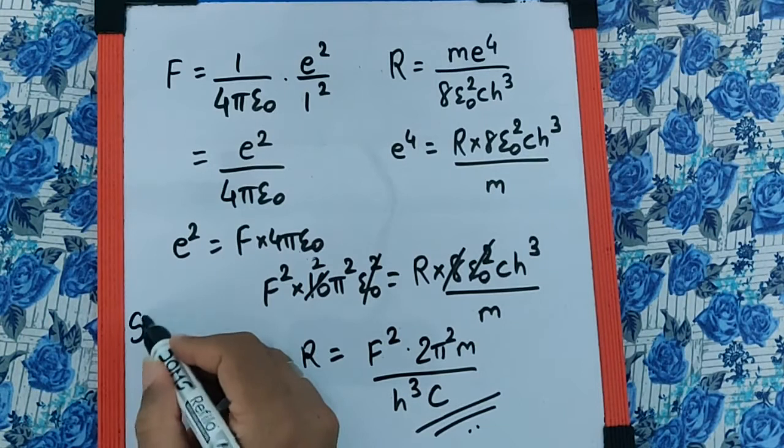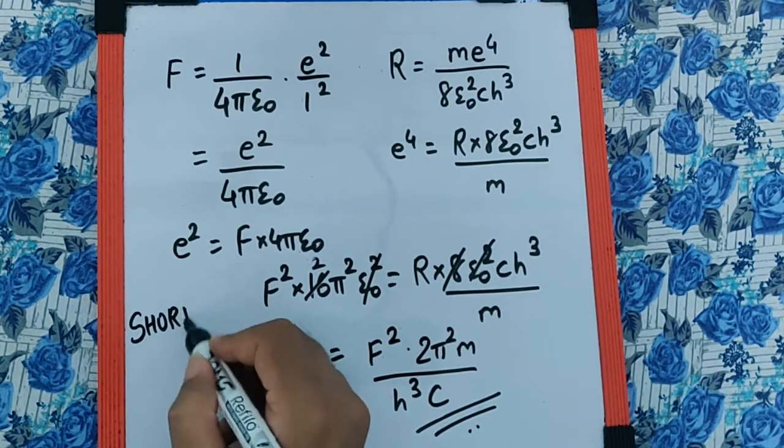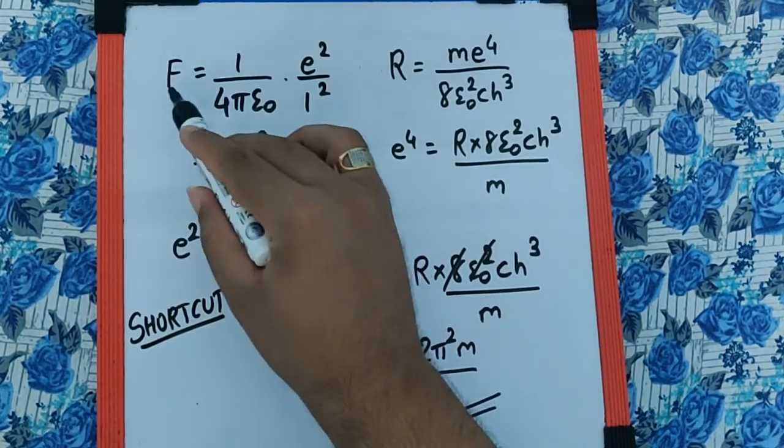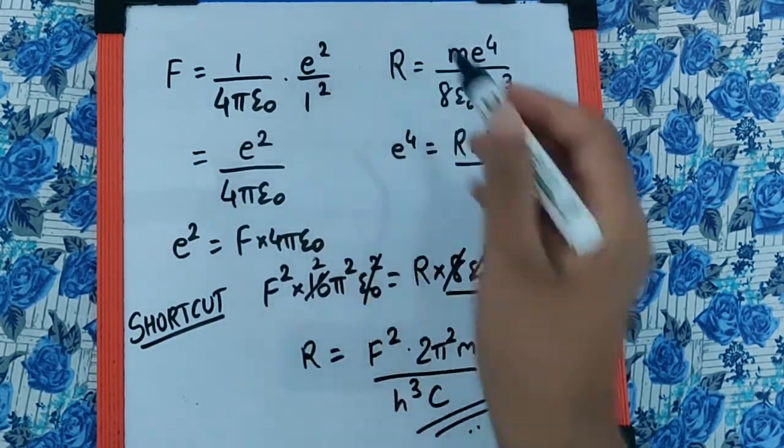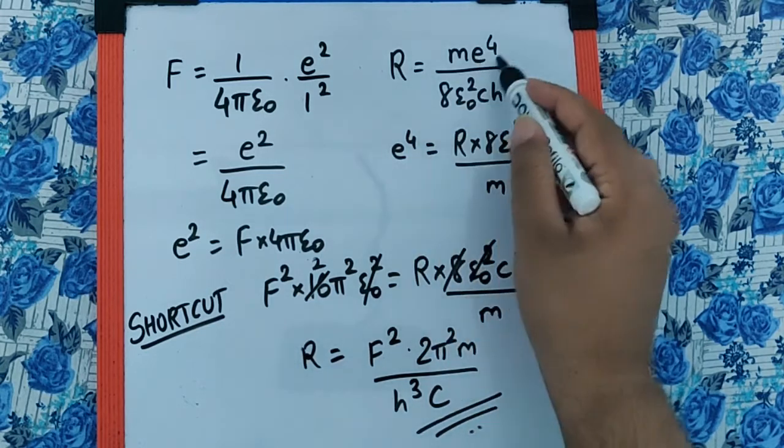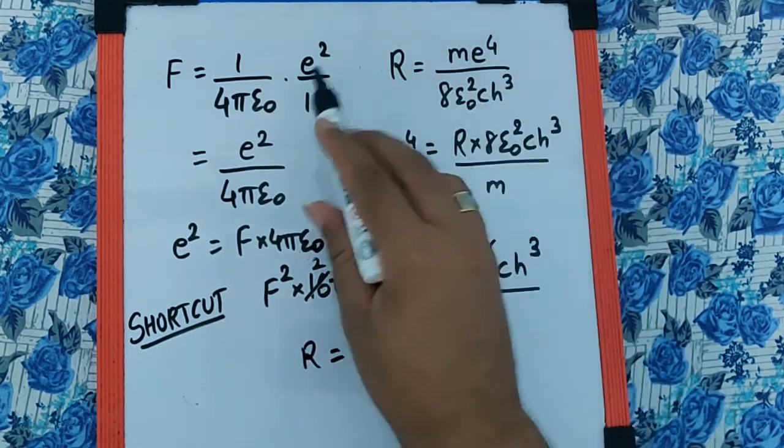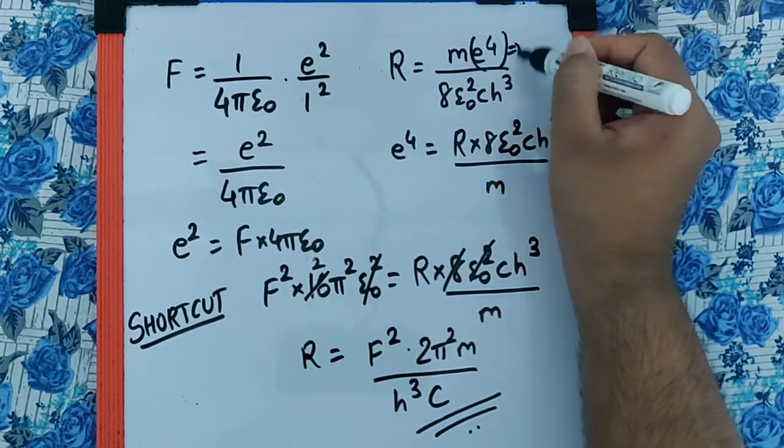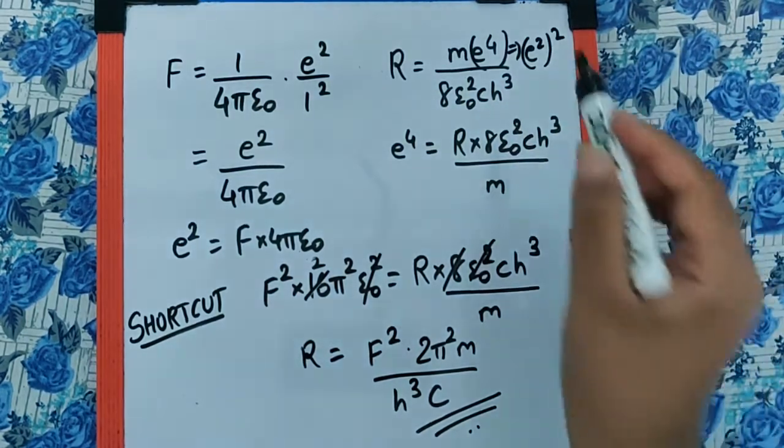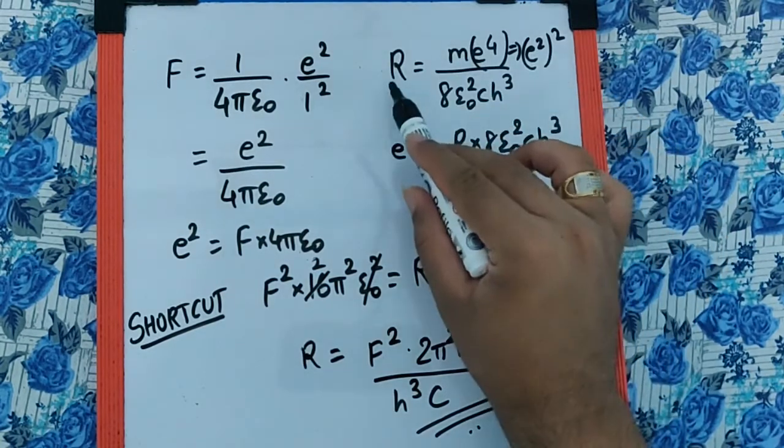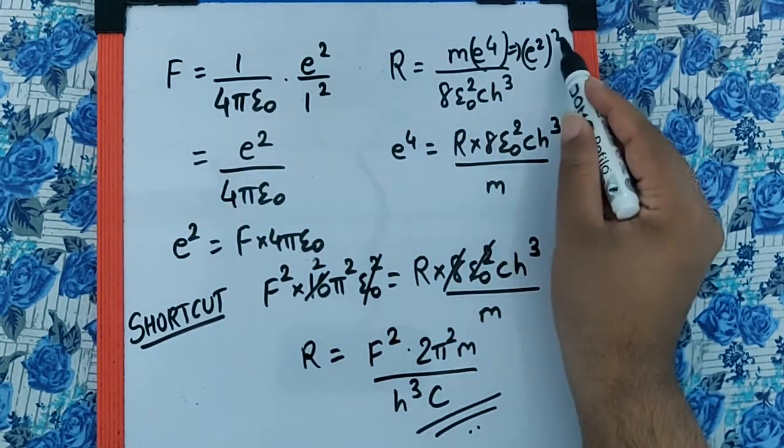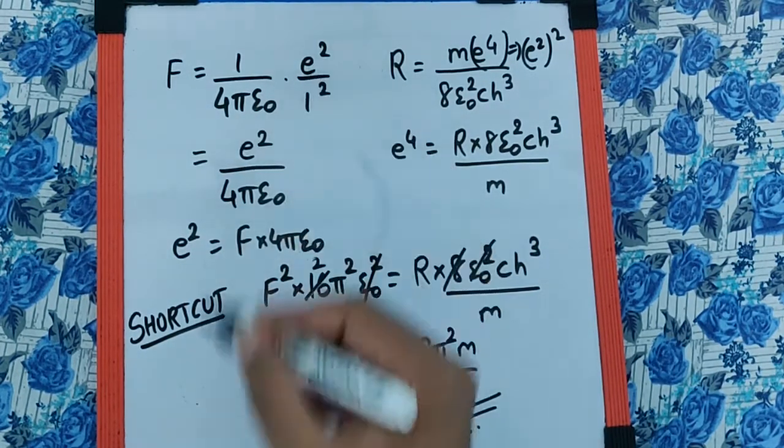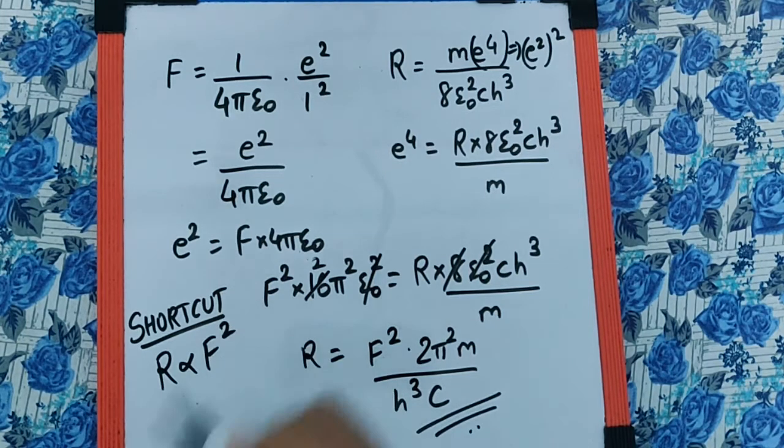Now a shortcut. Pay attention, in the formula of F there is e², and in the formula of R there is e⁴, which means the square of e². This can be called as e² squared, correct? And that means if we say R is directly proportional to e² squared, I can say F is directly proportional to e², and that means R should be directly proportional to F².